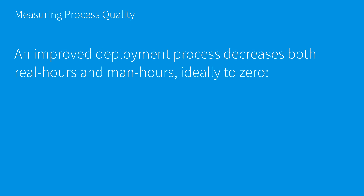How do we measure process quality as we move towards the three R's? It's simple. An improved deployment process should decrease both real hours and man hours, ideally to zero, in a couple of different ways. Firstly, we should be able to decrease our maintenance downtime to zero — that is, we should not have any scheduled maintenance windows, nor should we have any times where we have unscheduled maintenance windows and we're doing a fire drill to recover from any kind of issues during new deployments.